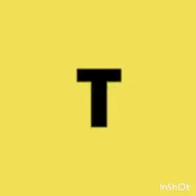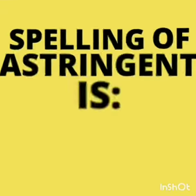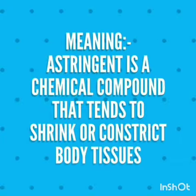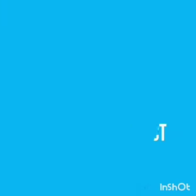Spelling of astringent is A-S-T-R-I-N-G-E-N-T. Astringent is a chemical compound that tends to shrink or constrict body tissue.